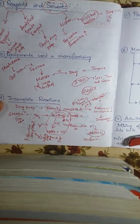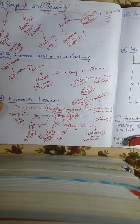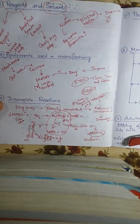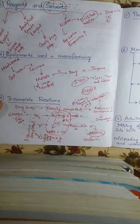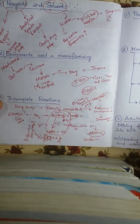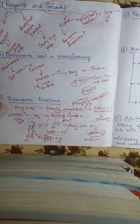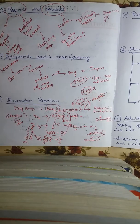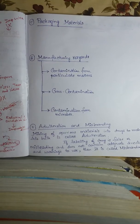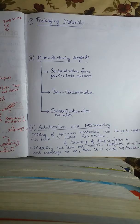So impurities can be generated from incomplete reactions. We can prevent this by maintaining the factors I mentioned — time, temperature, and pressure. That is the only thing we can do to prevent incomplete reactions. Now we move on to the next source, which is packaging material.